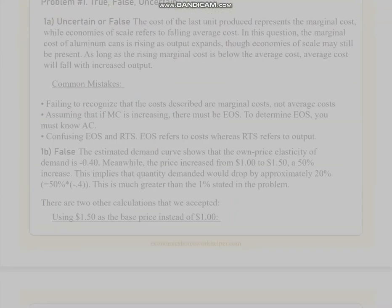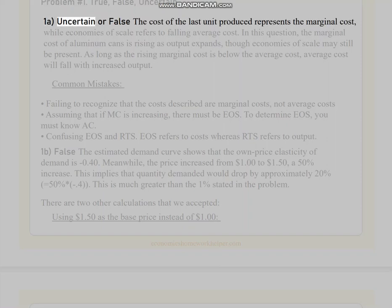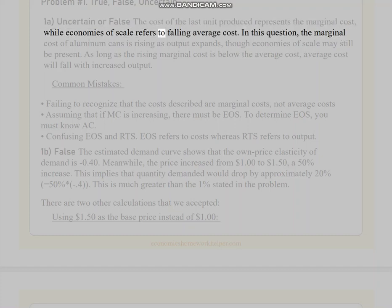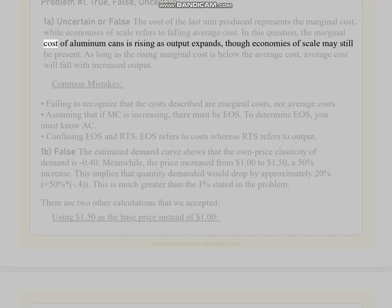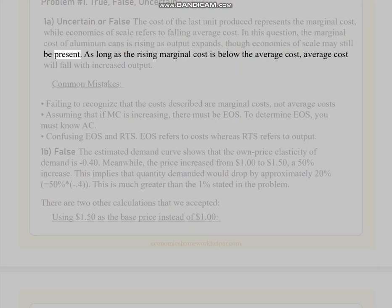Problem number 1 True, False, Uncertain. 1A. Uncertain or False. The cost of the last unit produced represents the marginal cost, while economies of scale refers to falling average cost. In this question, the marginal cost of aluminum cans is rising as output expands, though economies of scale may still be present. As long as the rising marginal cost is below the average cost, average cost will fall with increased output.